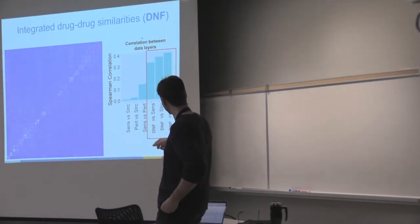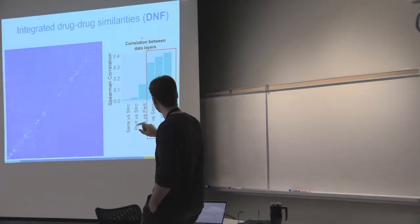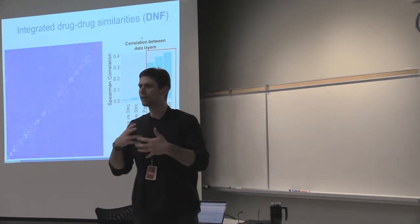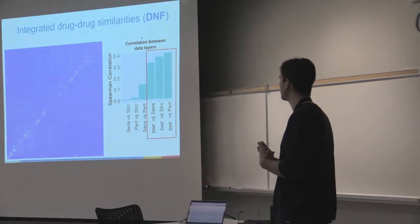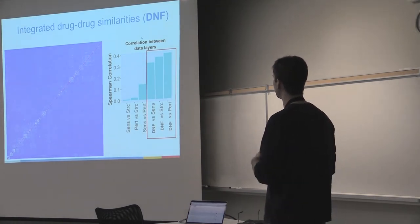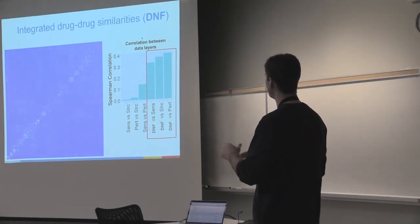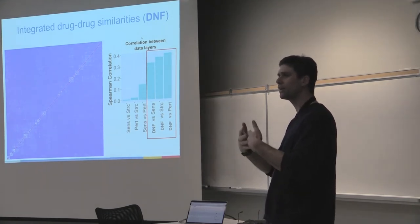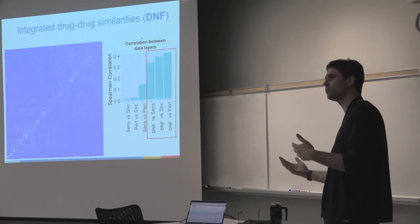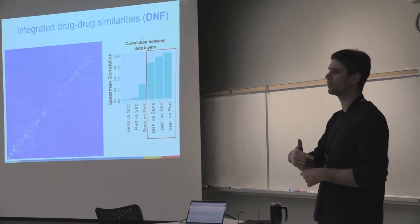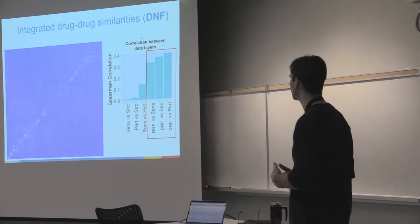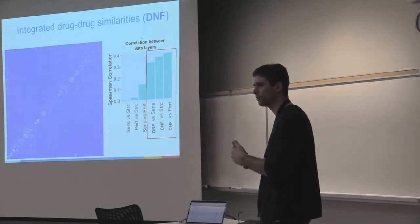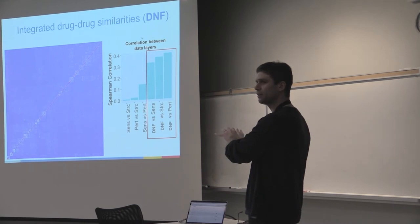There is very little correlation except maybe between sensitivity and perturbation. If you fuse those layers, you get a consensus layer, and as expected that consensus layer is much more correlated to every single data type — you find a trade-off between all those drug-drug similarities. So it does what we wanted it to do.